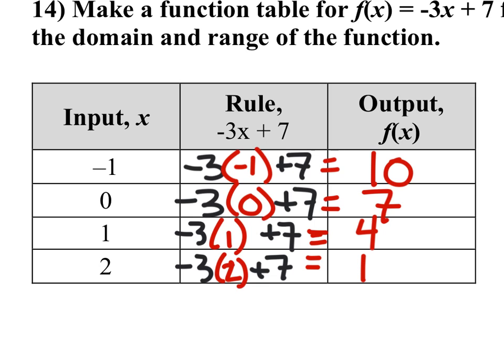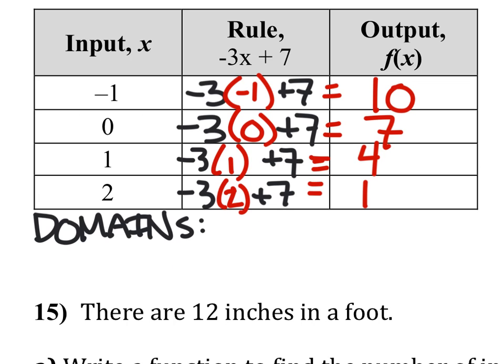But we're not finished with this, because now we need the domain and the ranges. The domain is, this is a set of numbers, so we have to use the fancy brackets. And the domain is just all of the x values, which is negative 1, 0, 1, 2. There's our domain.